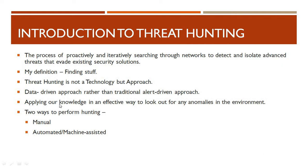There are various ways to perform threat hunting. The first is the manual way, where you manually search your network to look out for any anomalies or abnormal behaviors of a malware, using search queries or various tools in your environment. The second way is the automated or machine-assisted way, where automation tools or machine learning-assisted tools perform analysis at the initial level and surface anomalies based on machine learning algorithms. We'll be looking at both ways in this course.